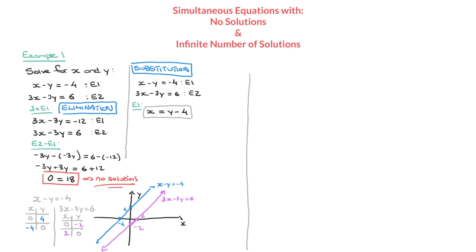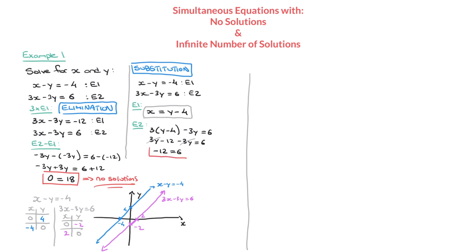We've made x the subject in equation 1. Now turning to equation 2, we copy it but replace x with y minus 4. So equation 2 becomes 3 times (y minus 4) minus 3y equals 6. Distributing the 3 gives 3y minus 12 minus 3y equals 6. The 3y terms cancel, leaving negative 12 equals 6 — again a mathematical contradiction.